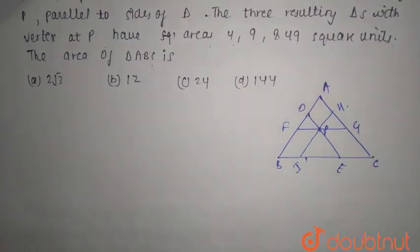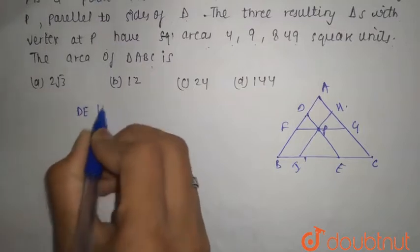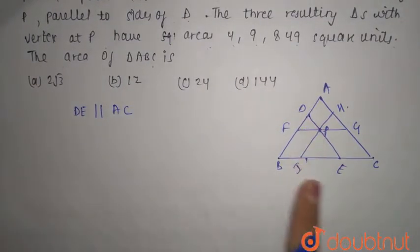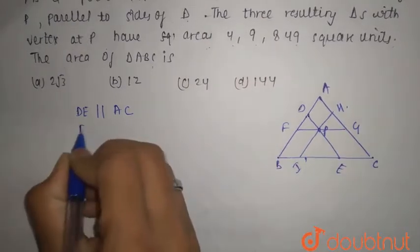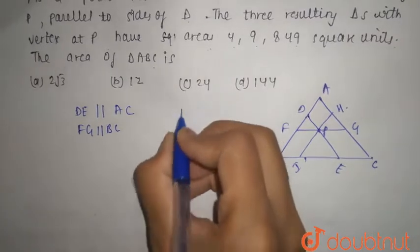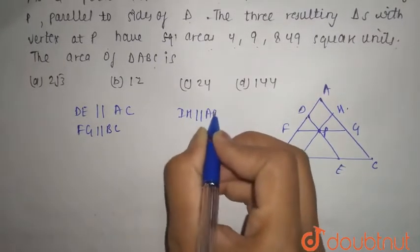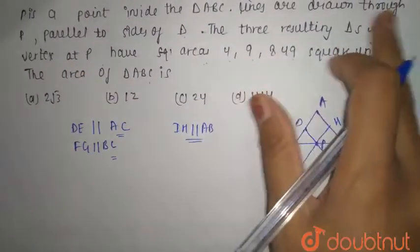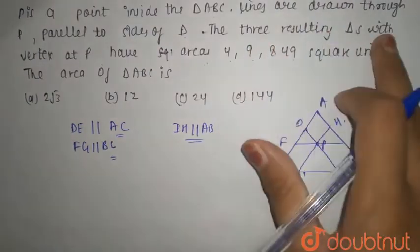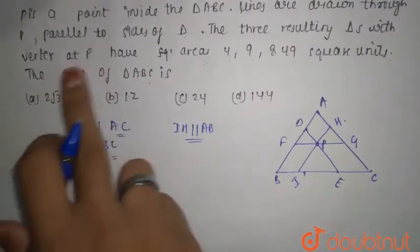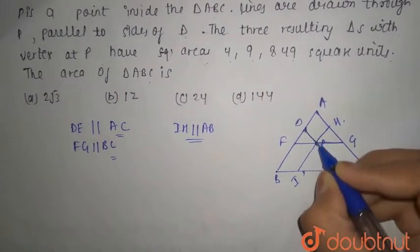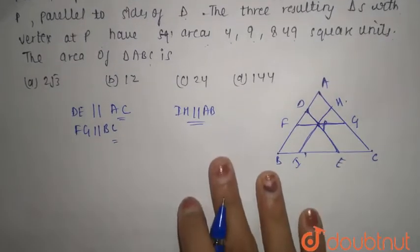So DE is parallel to AC, FG is parallel to BC, and IH is parallel to AB. Lines are drawn through P parallel to the sides of the triangle, giving us three resulting triangles with vertex at P — triangles one, two, and three.